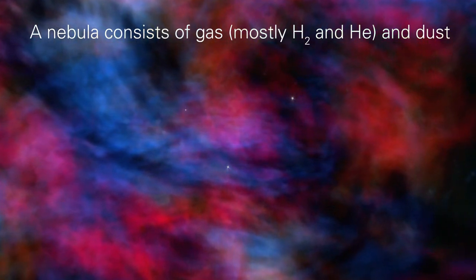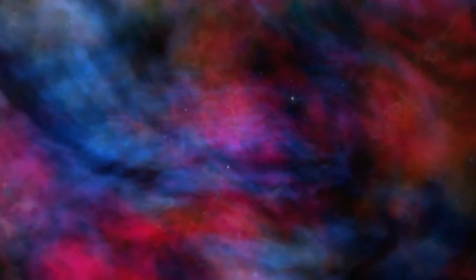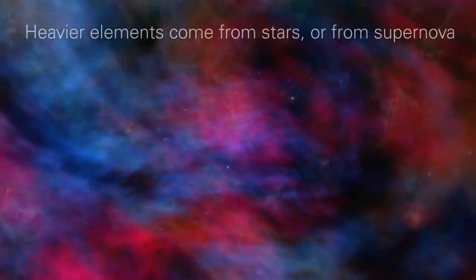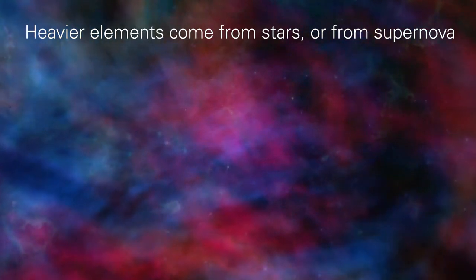Most of a nebula is hydrogen and helium left over from the Big Bang. The remainder consists of heavier elements formed in stars or during the death throes of stars.